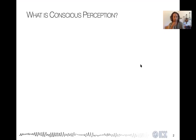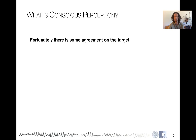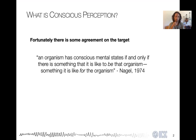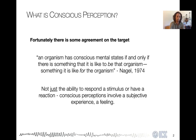Now what do I mean by consciousness? When I talk about conscious perception I'm going to defer to what I think is a relatively agreed upon use of the term in the field. Many people have in mind what Thomas Nagel had in mind when he wrote his 1974 paper, 'What is it like to be a bat?' The idea is that a mental state has a conscious mental state if and only if there is something it is like to be that organism. Conscious perceptions specifically are those that have a subjective experience or a feeling.